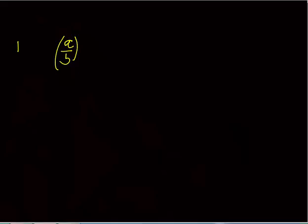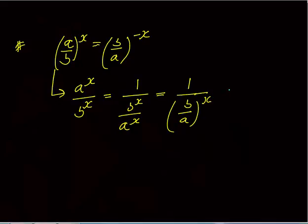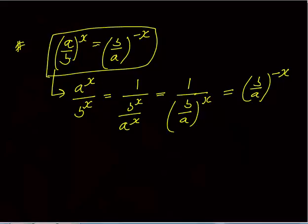The next important concept: (a/b)^x = (b/a)^(-x). How is this true? When I write (a/b)^x, it means a^x / b^x. This can be rewritten as 1 / (b^x / a^x), which equals 1 / (b/a)^x, which equals (b/a)^(-x). You don't have to memorize this — understand the derivation. This concept allows difficult questions to be solved easily.